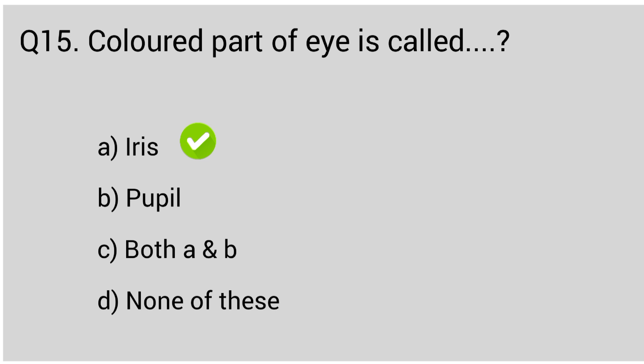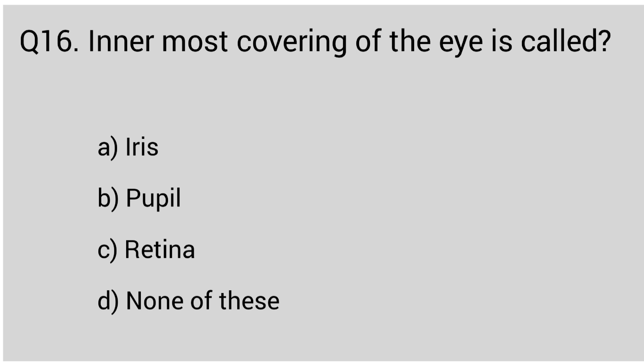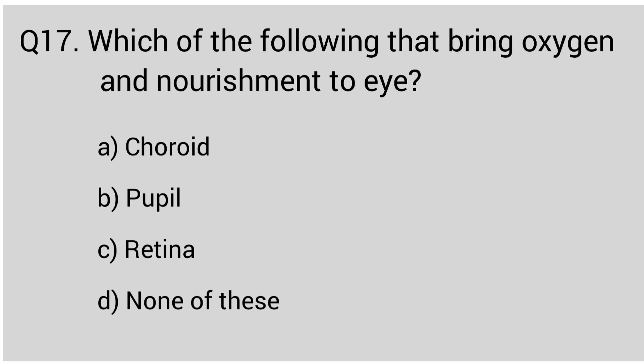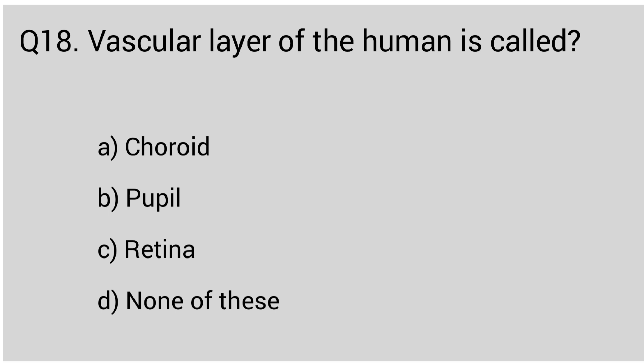Question number sixteen: the innermost covering of the eye is called. The correct answer is option C, retina. Question number seventeen: which of the following brings oxygen and nourishment to the eye? The correct answer is option A, choroid. Question number eighteen: the vascular layer of the human eye is called. The correct answer is option A, choroid.